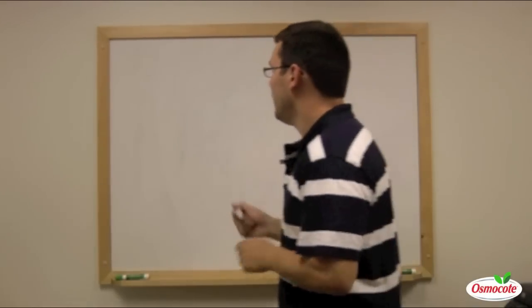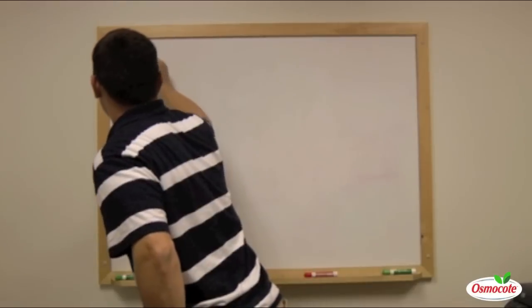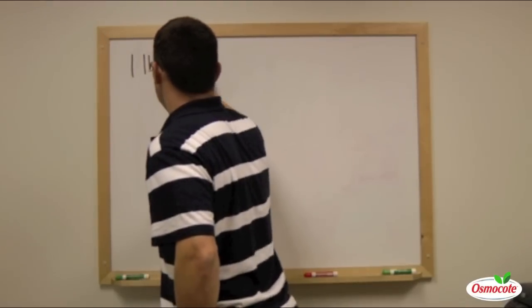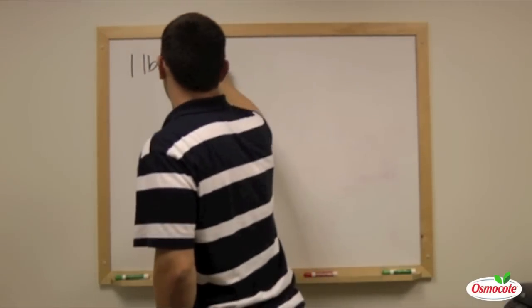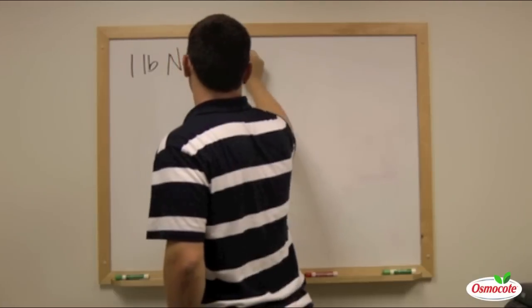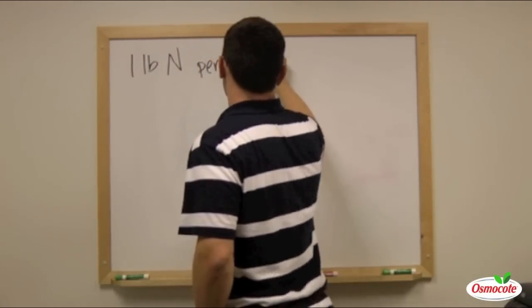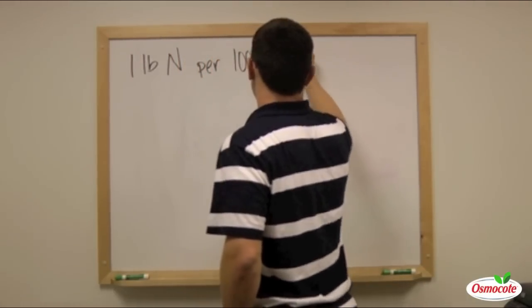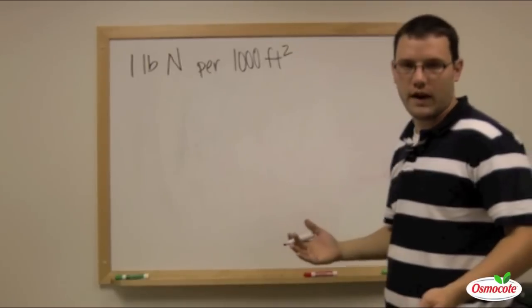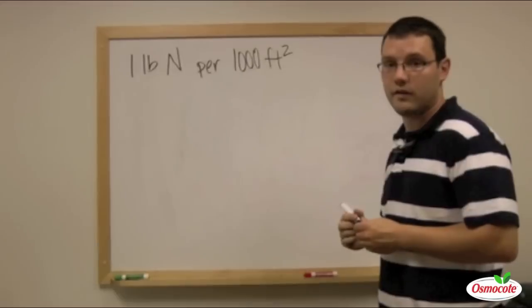So a good example is around here, we like to apply one pound of nitrogen per 1,000 square feet of turf grass, our lawn. We apply this nitrogen in the fall.